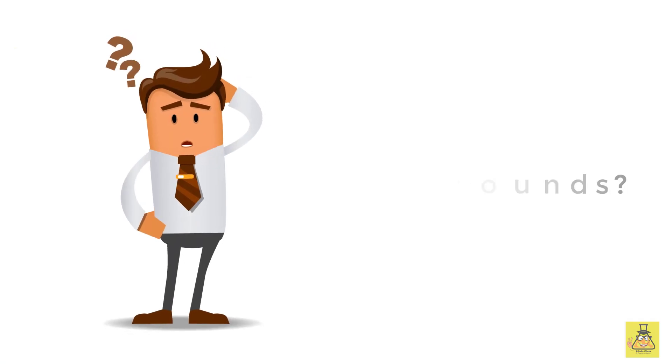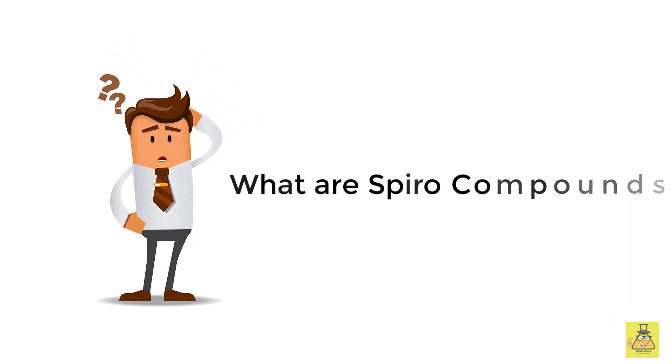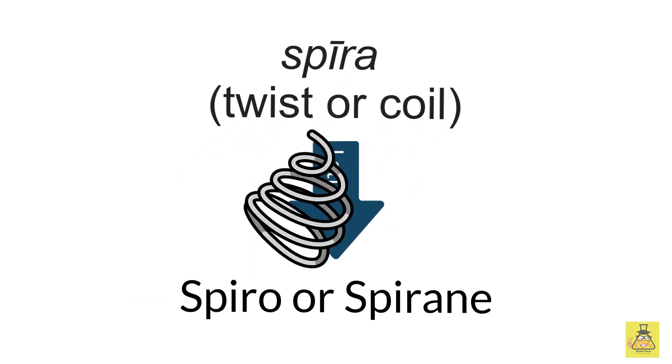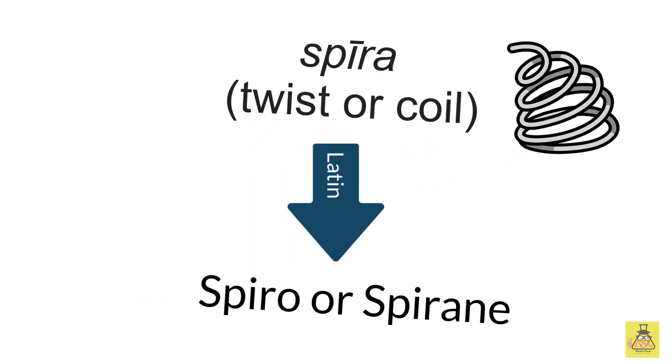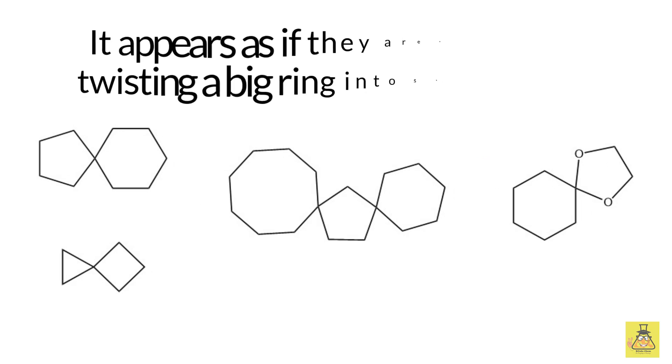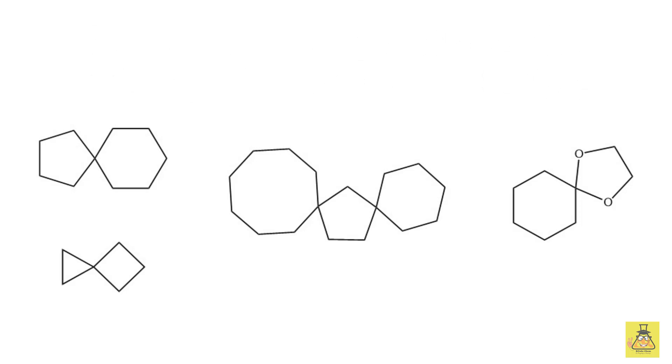A lot of you would be like, wait a sec, what are spiro compounds in the first place? So let's answer that first. The word spiro or spirene, which they are sometimes referred to, comes from the Latin word spira, meaning a twist or coil. Here are a few examples of spiro compounds. Why they are called twisted or coil is very evident by looking at the structure.